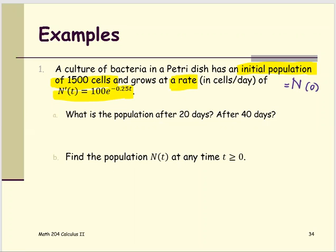Part A asks for what is the population after 20 days and after 40 days, or basically asking for N at 20 and N at 40.